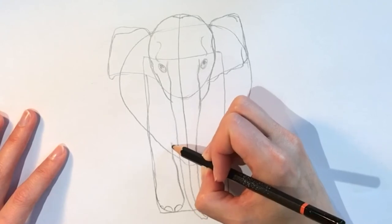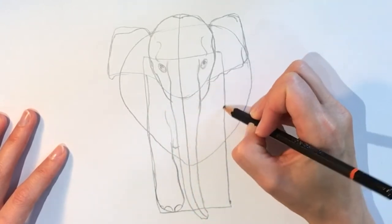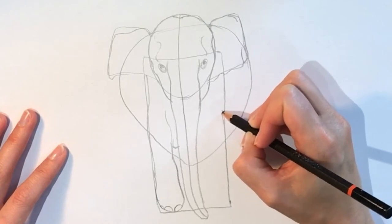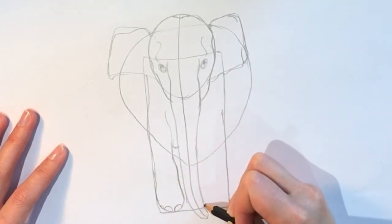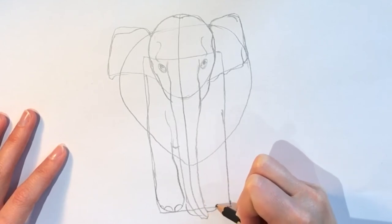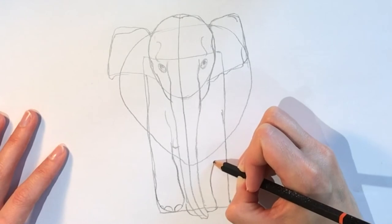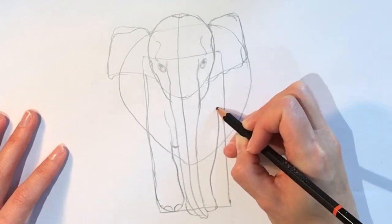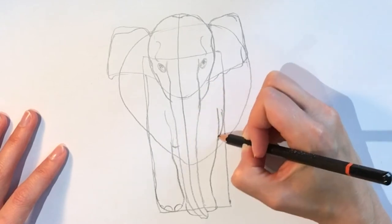Show the bottom of the body there. Then we're going to do the other one. So this one just comes behind here, goes all the way up, and then joins up with that rectangle shape.